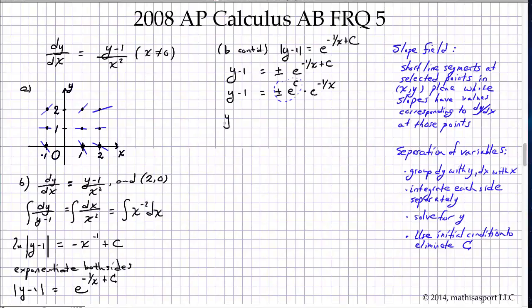So finally, I wanted y by itself, so I'll write plus or minus e to the c times e to the negative 1 over x. Now I can apply the initial condition.